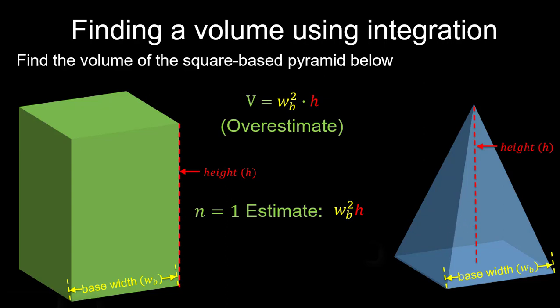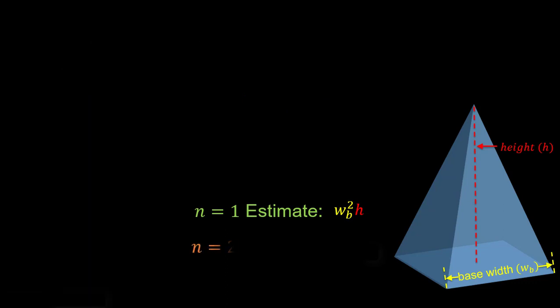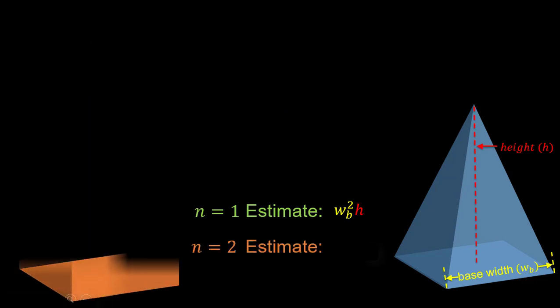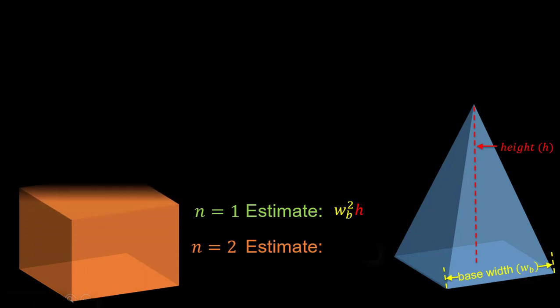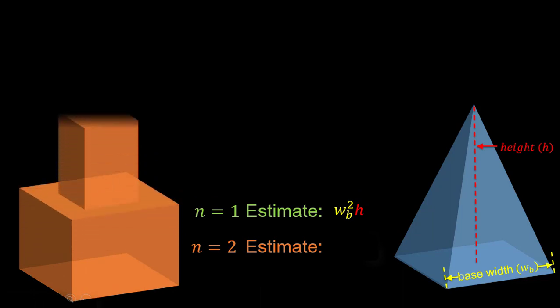Now that we have our n equals 1 estimate, let's make this a little higher fidelity and get an n equals 2 estimate. Instead of one rectangular solid, we're going to have two — a base rectangular solid and one on top.